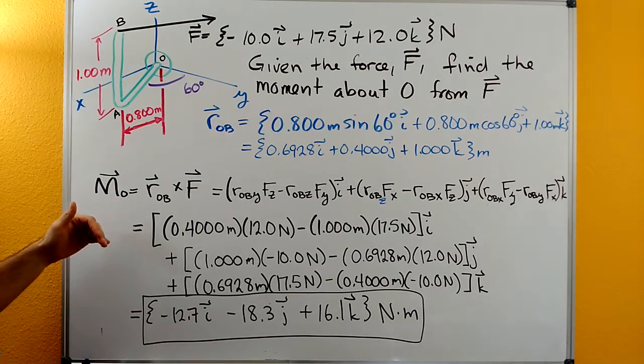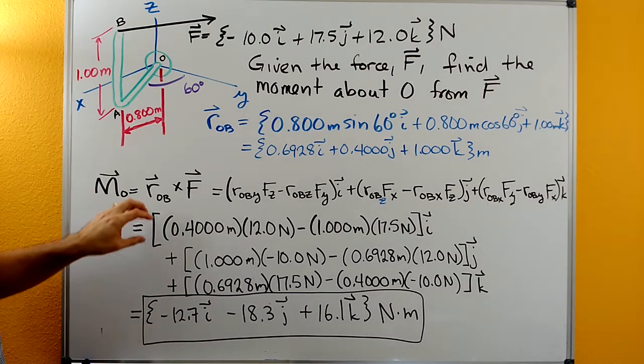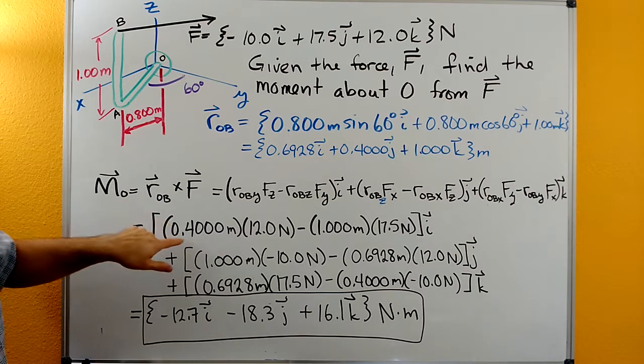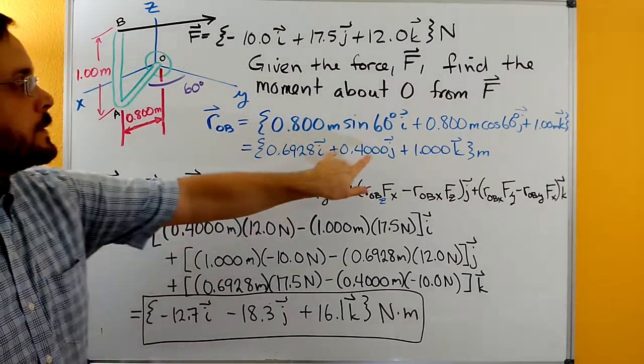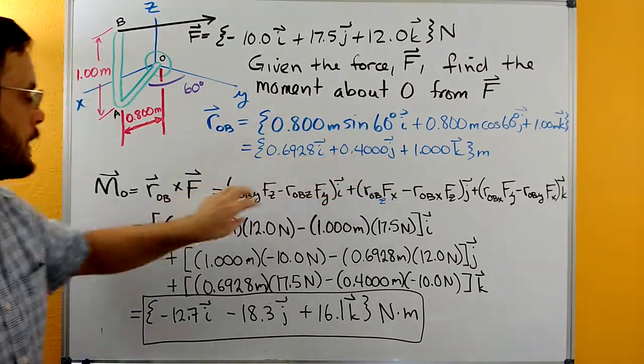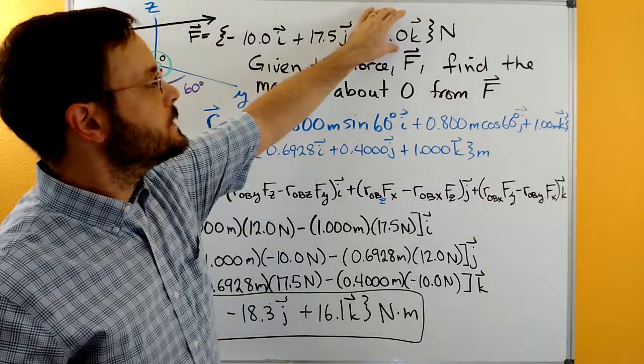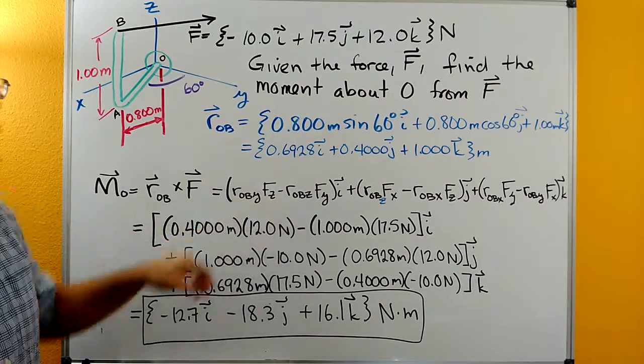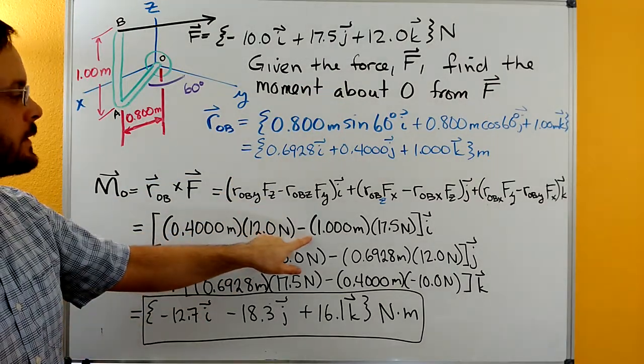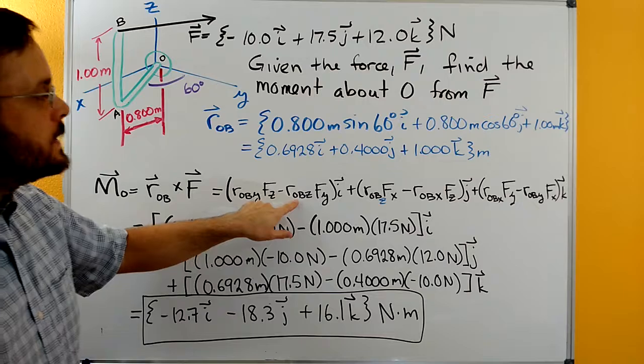Plugging everything into this equation, we just go and grab the terms. So ROBY is going to be this 0.4 here. We'll grab it and place it here with its unit. And then FZ is this Z component of F and we'll place it here. Then we'll subtract off the ROBZ here, the 1,